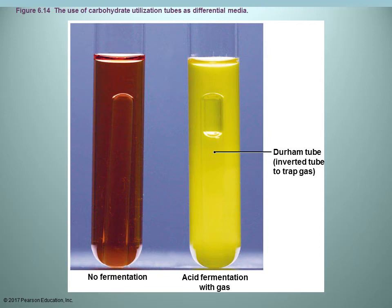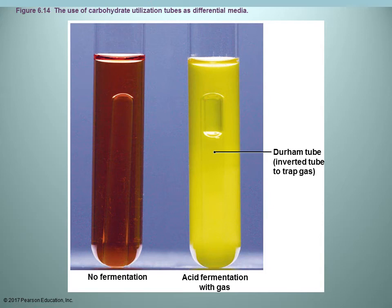Another differential example uses liquid broth for carbohydrate utilization — looking to see whether fermentation occurred. A pH indicator is added: the tube is initially red at neutral pH; when acid is produced during fermentation it turns yellow. You can also observe gas production via a Durham tube — an inverted tube inside the broth that collects gas bubbles — indicating not only acid but also gas production.